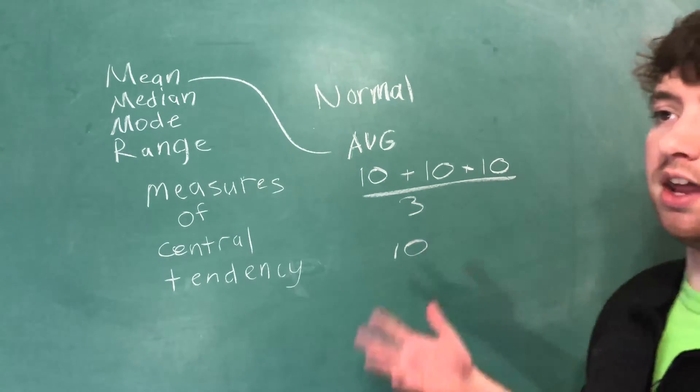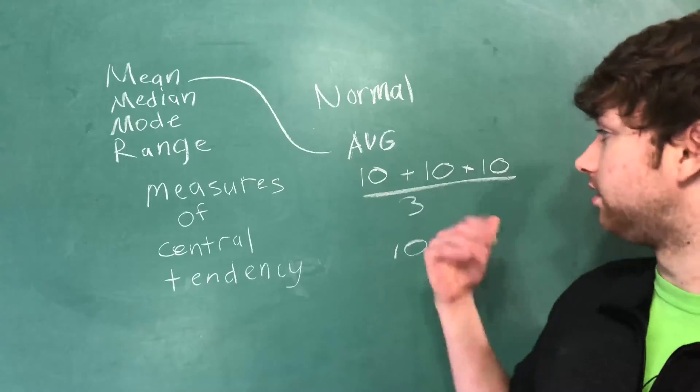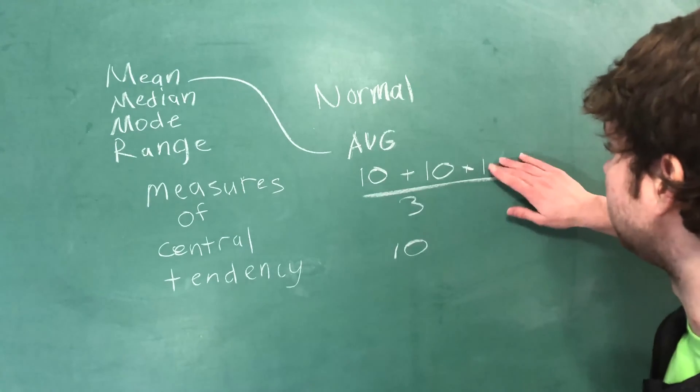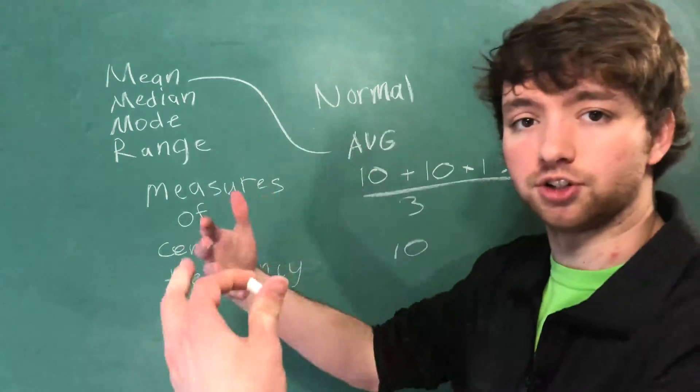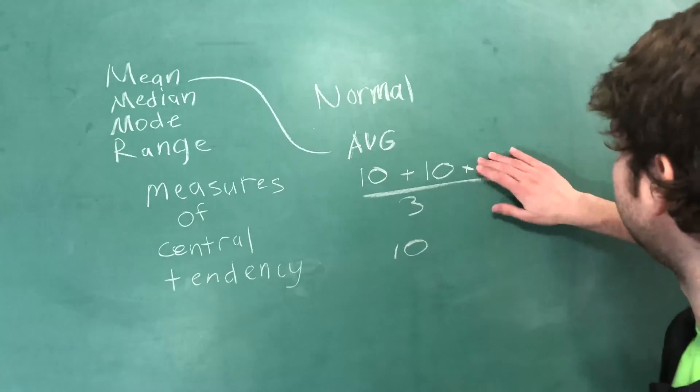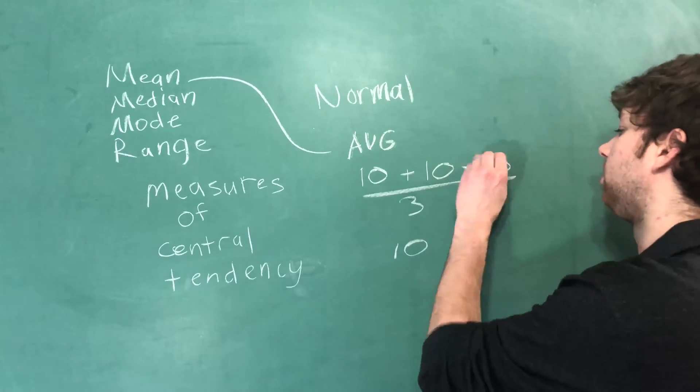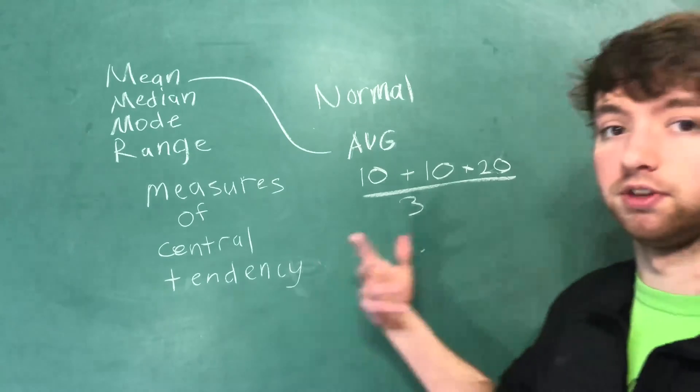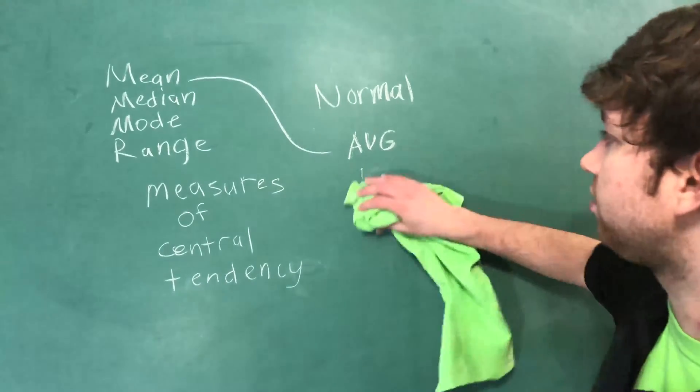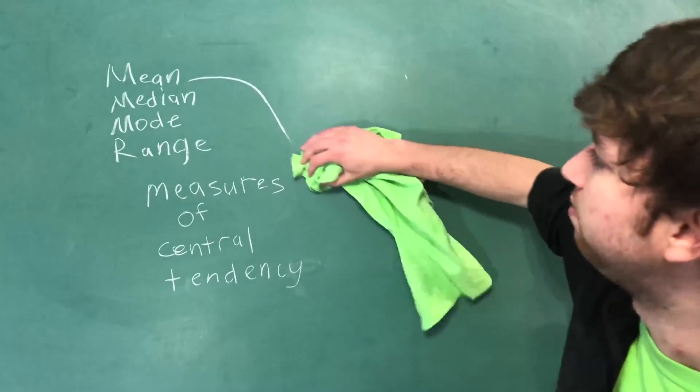Which makes sense - the average is 10 because all values are 10. But if you increased one of these, that's going to increase the average by a certain amount. If you made this 20, now when you divide it by three, it's going to be a number bigger than 10. So the mean tells you the average.